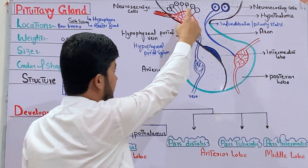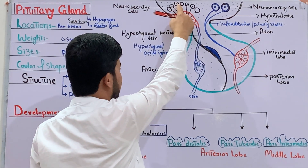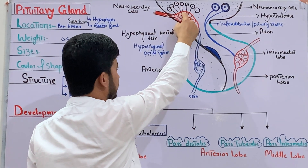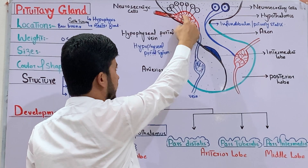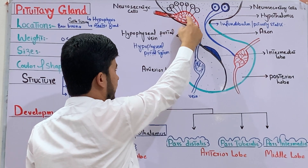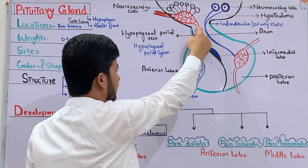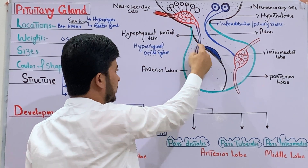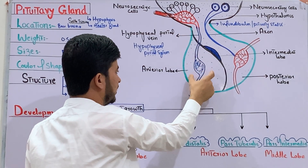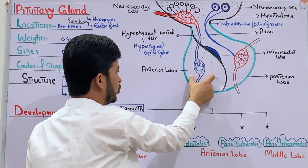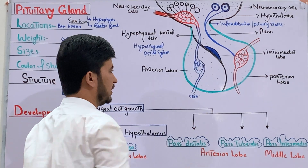Through the hypophyseal portal system, the neurohormones from the hypothalamus reach the anterior lobe of the pituitary gland and regulate its secretions.